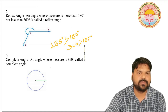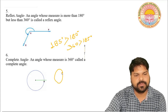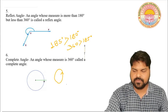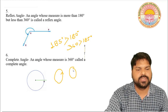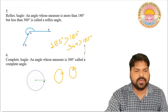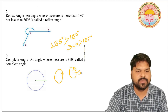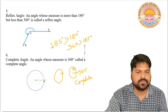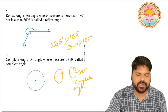Last, we discuss the complete angle. Think about a circular track — when we complete one full revolution, like a cycle or wheel completing one full rotation, the angle formed is 360 degrees. An angle whose measure is 360 degrees is called a complete angle. In Hindi, we call it a poorn kon.